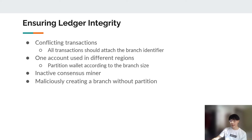The second one is one account used in different regions. Multiple people can use the same account in different regions, so they can spend all of the balance in multiple branches. It's similar to double spending. To avoid this, the wallet will be also partitioned when the chain is split. For example, in the branch with one third of the consensus miners, one account can only spend up to one third of its balance. So it cannot spend more than what it has across multiple branches. There are two more threats in our paper, inactive consensus miners and maliciously creating a branch without partition.